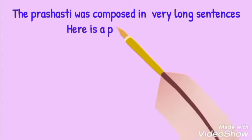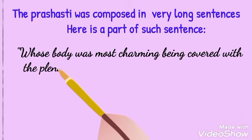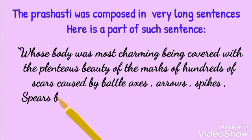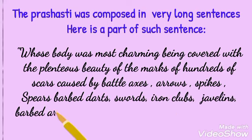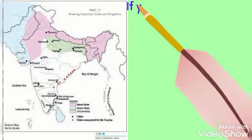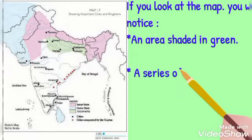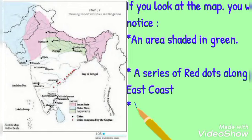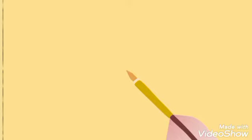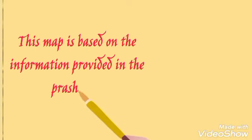The prasasti was composed in very long sentences. If you look at the map clearly, you will notice an area shaded in green, a series of red dots along the east coast, and areas marked in purple and blue. This map is based on the information provided in the prasasti.